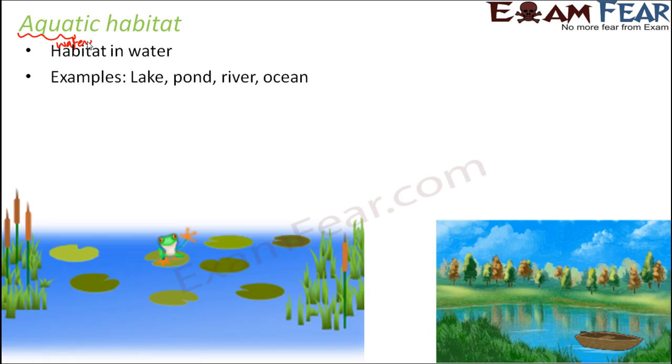The other type of habitat is aquatic habitat. The term 'aqua' means water, so habitats in water are called aquatic habitats. Examples include river, ocean, pond, and lake — these are all examples of aquatic habitats.